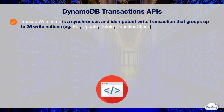TransactWriteItems is a synchronous and idempotent write transaction that can group up to 25 write actions, including the put, update, delete, and condition check actions. Synchronous transaction means each subsequent operation can only be executed if the previous operation succeeds. Idempotency helps prevent data errors in case the same operation has been submitted multiple times due to connectivity issues.